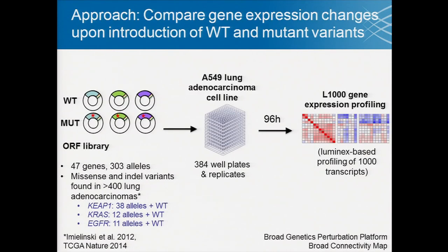Our approach was to take mutations observed in lung adenocarcinoma from two papers, including one from the TCGA project, and create an ORF library of both the wild type versions of 47 genes as well as missense and indel variants observed in these genomes. From this ORF library, we infected A549 lung cancer cells in multiple replicates, and then after 96 hours, assayed gene expression using an approach called L1000 — a reduced representation of the transcriptome that profiles 1,000 transcripts at very low cost, which helps since we're assaying many variants in high replicate.